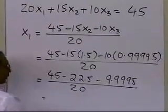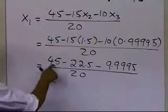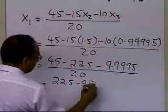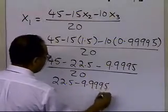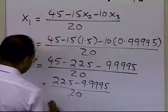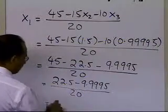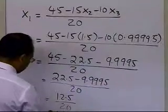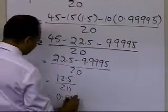Again, I don't do all these subtractions at the same time. I'll first do this and this. I get 22.5 minus 9.9995 divided by 20. Now I do this calculation, and I get 12.5 divided by 20, and that gives me 0.625.